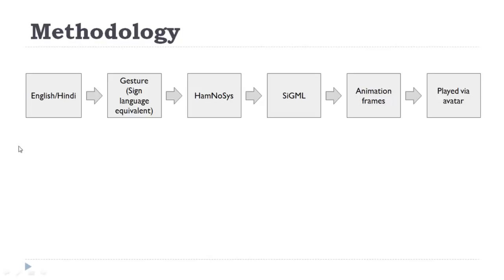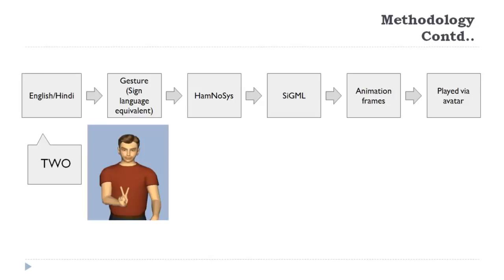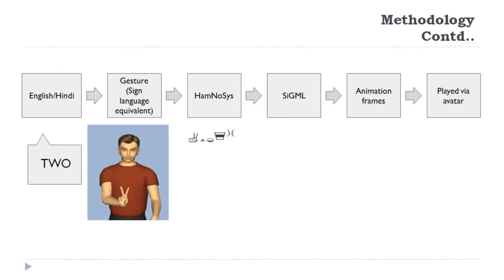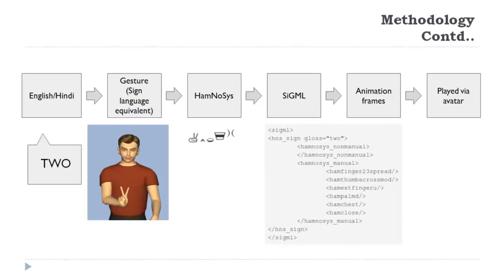This portal takes English and Hindi as input sentences. For example, if our input is the number 2, we want to generate its equivalent sign in Indian Sign Language. Internally, each word is converted into HamNoSys notation for representation of signs. This HamNoSys representation is then converted into Sign Gesture Markup Language, which is similar to XML, for processing with an avatar. Finally, the avatar generates the animation frame for the input word.